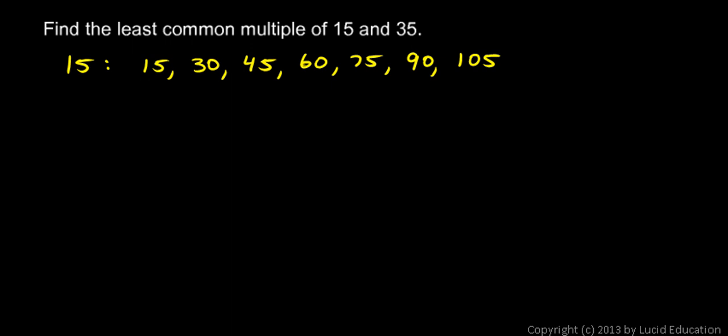Now we need to list multiples of 35. So 35 times 1 is 35, 35 times 2 is 70, then 35 times 3. Let me scribble this out, 35 times 3, 5 times 3 is 15, 3 times 3 is 9, add 1, that's 10, so 105. And we found a common multiple. 105 shows up in both lists.